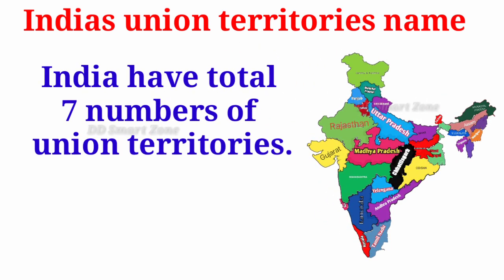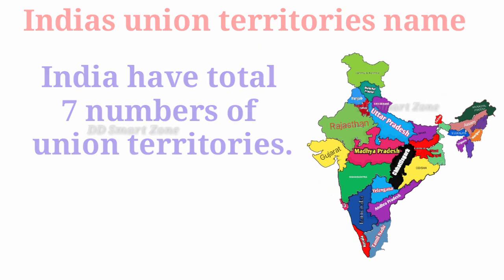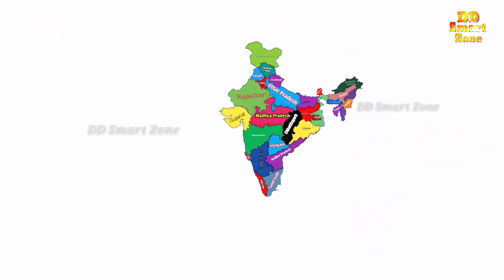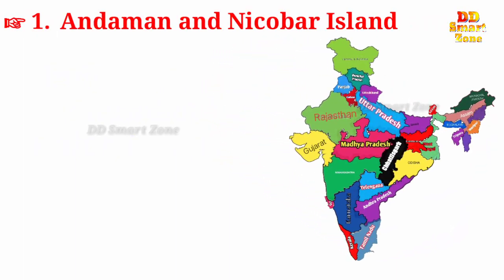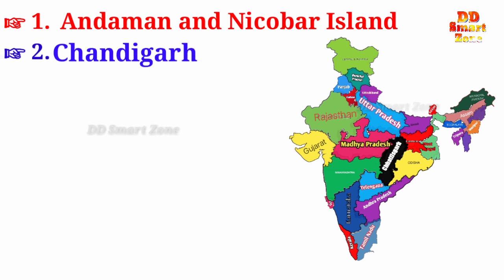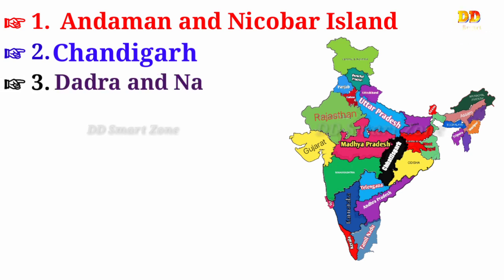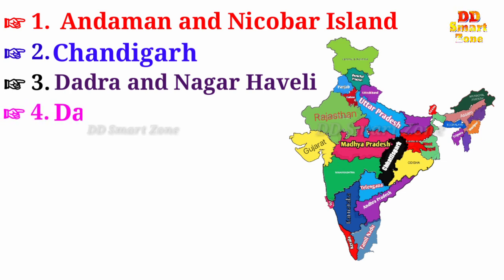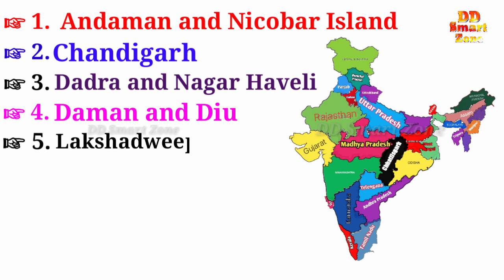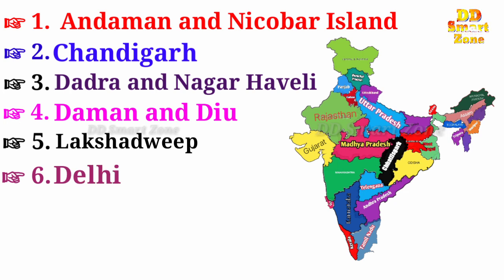India has a total of 7 union territories. Number 1: Andaman and Nicobar Islands. Number 6: Delhi. Number 7: Puducherry.